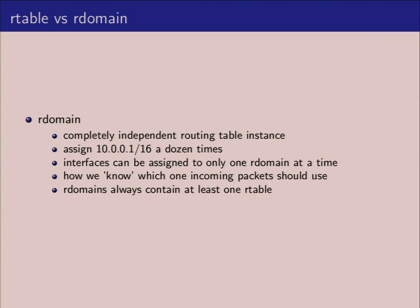A routing domain is a completely independent routing table — a different instance inside the kernel. This allows you to assign the 10.0.0.0 network multiple times and have completely independent networks. An interface, however, can only be assigned to one routing domain at a time, because when a packet comes in, you need to know which routing domain to route it in and how to handle it.